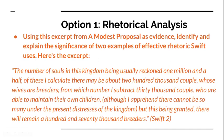So here is our first option which might be on the final exam. Option one deals with rhetorical analysis. Using this excerpt from A Modest Proposal as evidence, identify and explain the significance of two examples of effective rhetoric Swift uses. Here's the excerpt. This is the excerpt that you may see on the final exam, and if this option is there and you choose to answer it, you would choose two examples of rhetoric from this particular quote and write your paragraphs answering the question using this evidence.